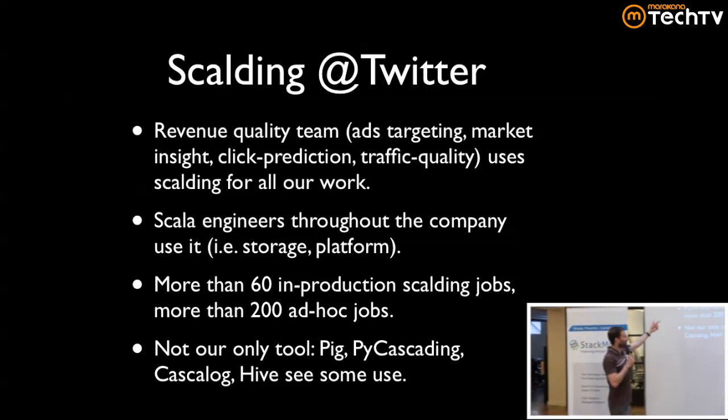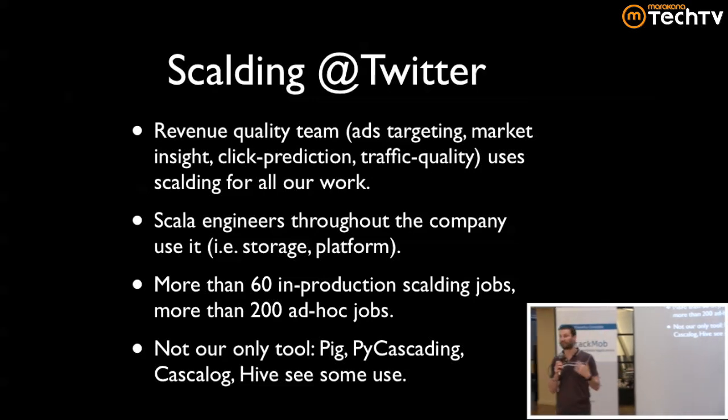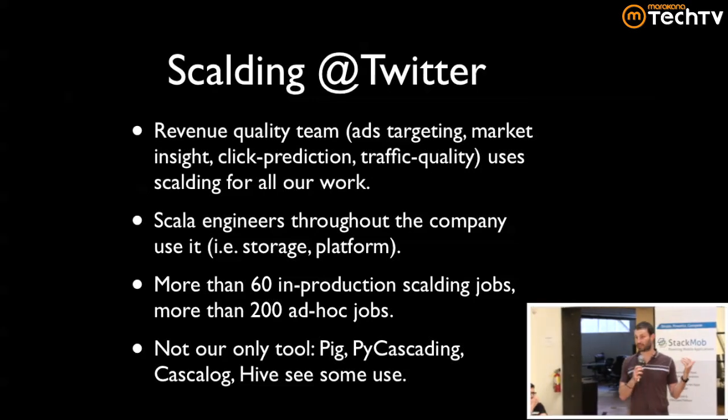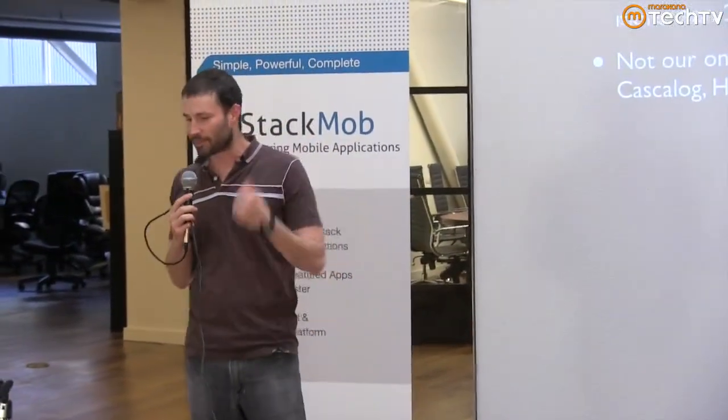We've got more than 60 production jobs — jobs that if they don't run, we get alerts and bad things happen. We've got more than 200 ad hoc jobs, like someone asks how many times did some user say something in the last three days. And they work. I don't want to give the impression that Scalding is our only tool at Twitter — we have a lot of people on analytics who love Pig, the Cascalog guys use Cascading, and there's also a Python DSL inside Twitter called py-cascading. We use a lot of Cascading, but also Pig and a little bit of Hive.